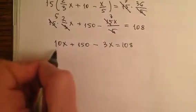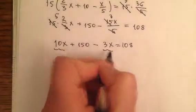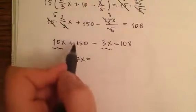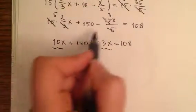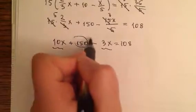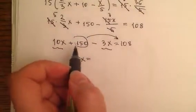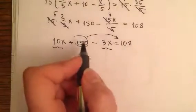Now I need to work this out. Ten x minus three x gives me seven x. Now I need to move one hundred fifty to the right side. When I move a positive number from the left to the right, it becomes negative.